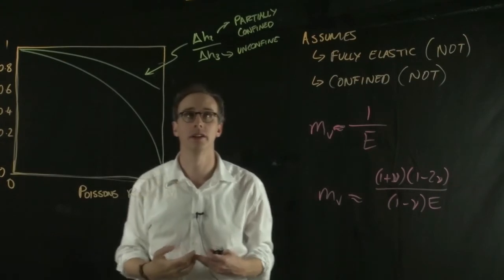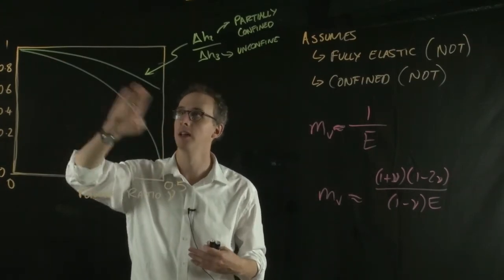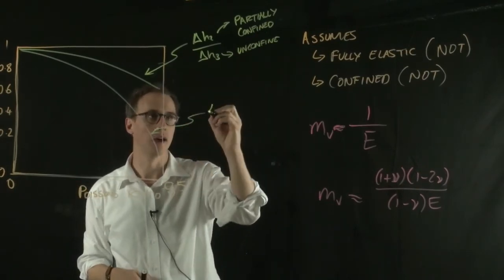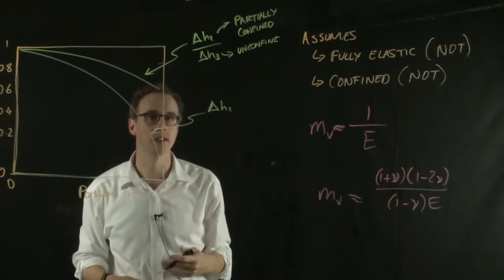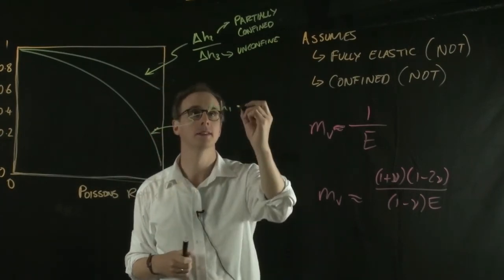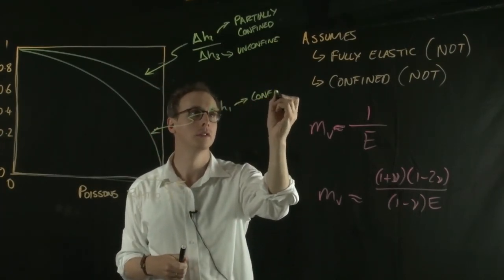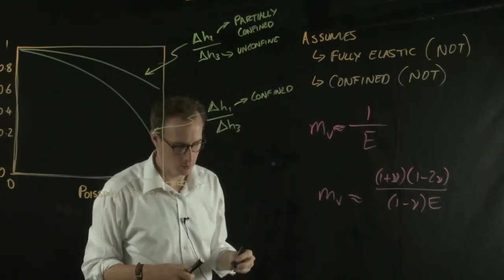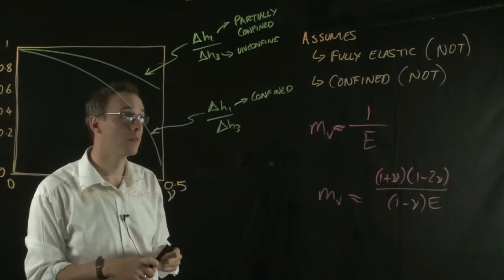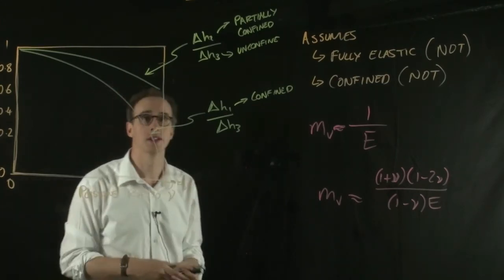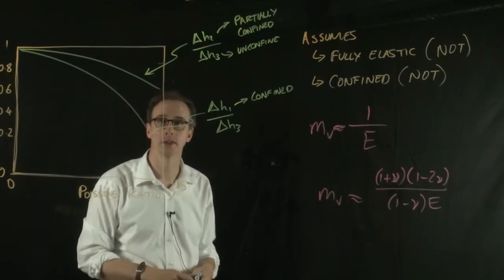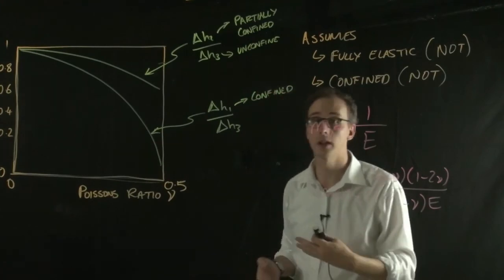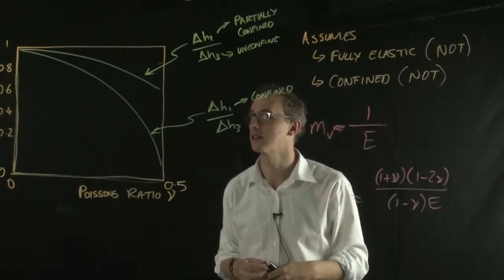This line here is the difference between your delta H1, which is the confined case or confined predicted settlement, and delta H3, which is the unconfined. We can see that in this situation, with our increase in Poisson's ratio, we have quite a marked deviation, or a marked difference in the total settlements.